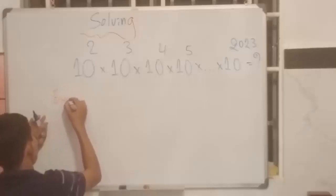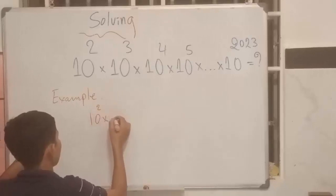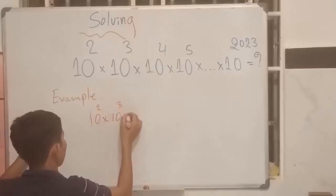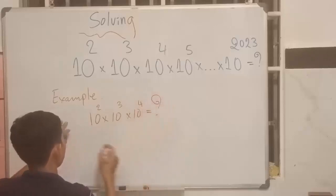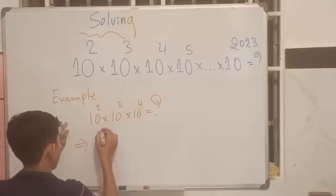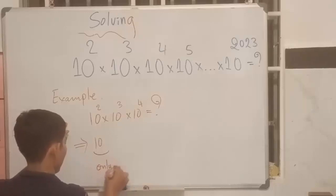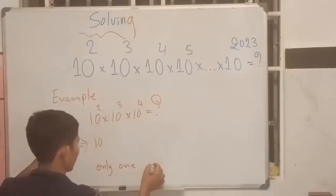I will just make it simple for you. It's important 10 to the 2 plus 10 to the 3 then 4. We write in only one, we don't write in at all 10, only one.